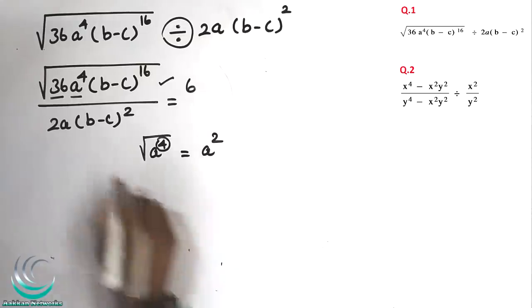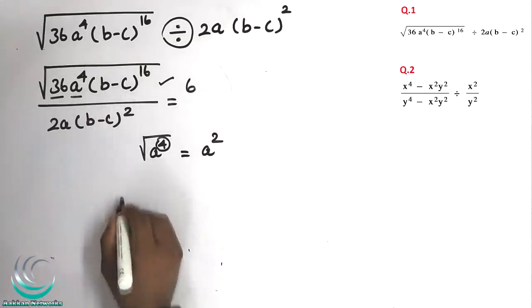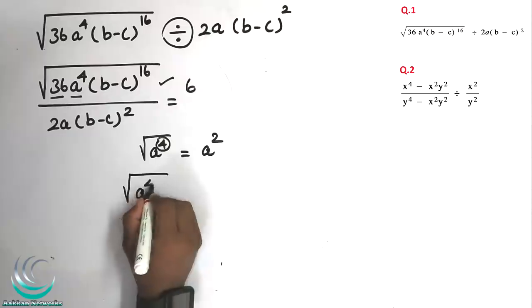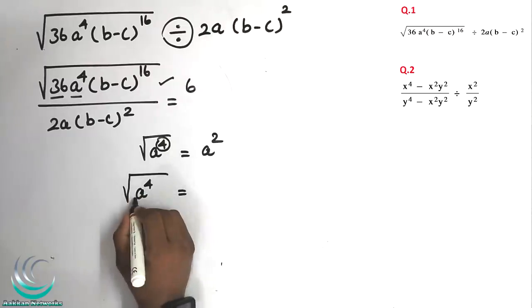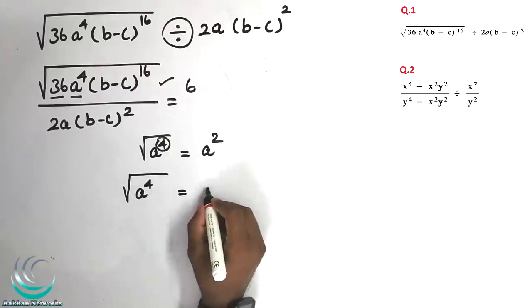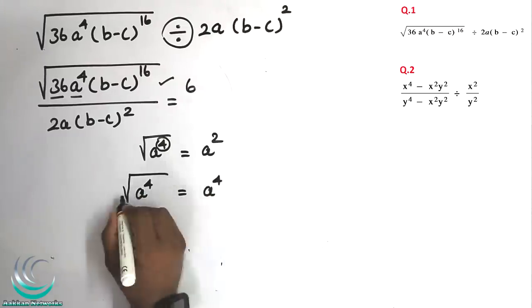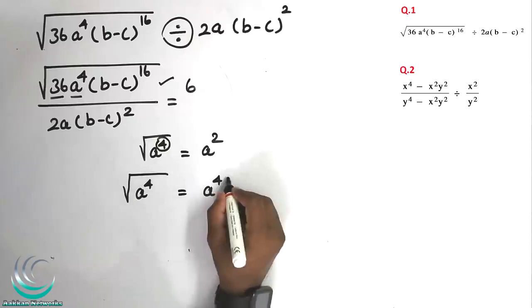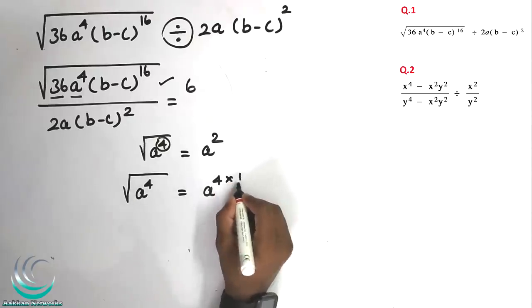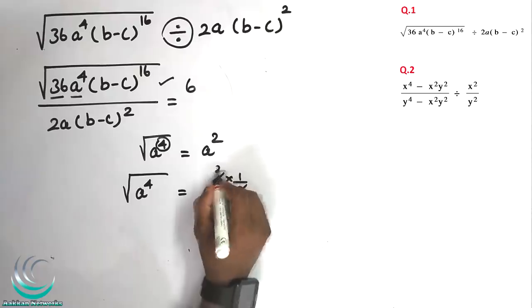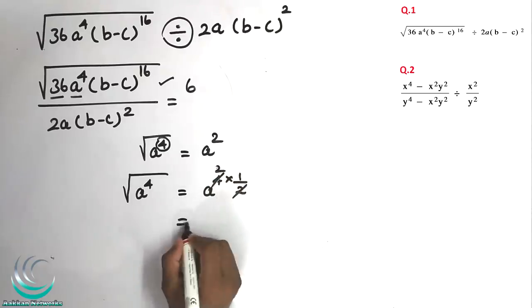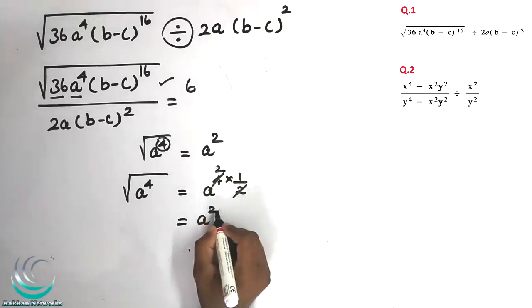Now, we will try to find the square root of a power 4. So a power 4 — we take square root of a power 2 multiplied together. The 2 cancels, giving us a power 2.